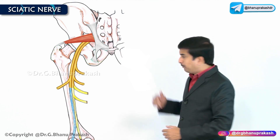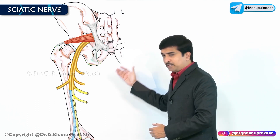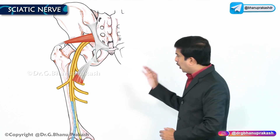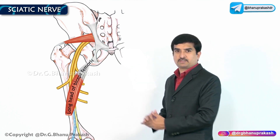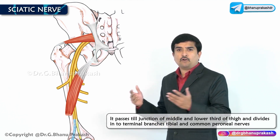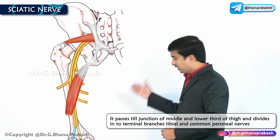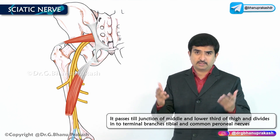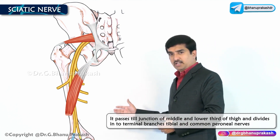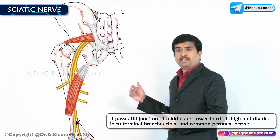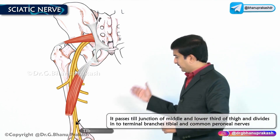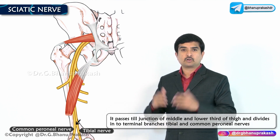In the posterior aspect of the thigh, the nerve is crossed by the long head of the biceps femoris and passes till the junction of the middle and lower third of the thigh, near the popliteal fossa, where the nerve divides into two terminal branches: tibial and common peroneal components.